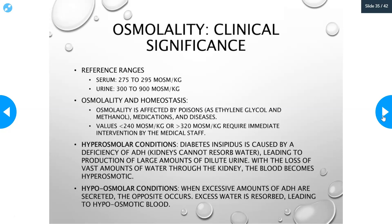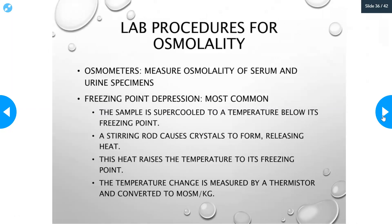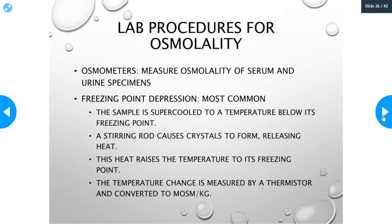A hypo-osmolar condition is the opposite — when you have an excessive amount of antidiuretic hormone secreted. You have very concentrated urine and very dilute blood. Other hyperosmolar conditions are usually poisonings like ethylene glycol poisoning, accidental ingestion of methanol, or large amounts of alcohol. Alcohol is very dehydrating to the body.